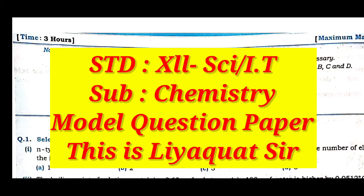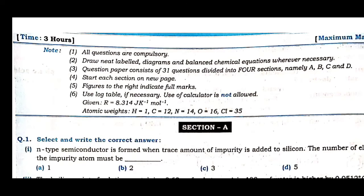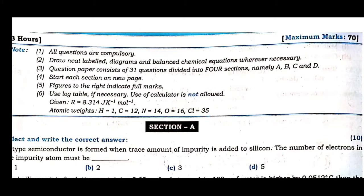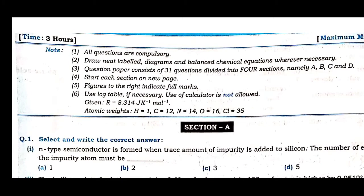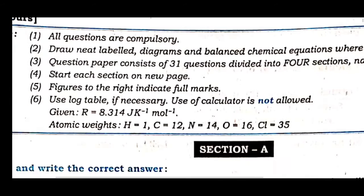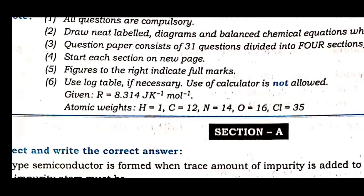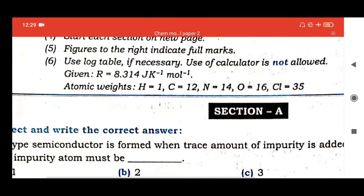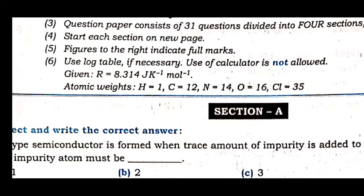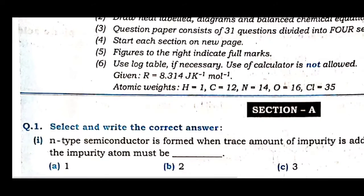Welcome back to the chemistry lecture for 12th science. We will see the model question paper. Last time we saw one model of chemistry; now we will see the solution with respect to the new model question paper. The total maximum marks are 70, duration is 3 hours, total number of questions are 31, divided into four sections A, B, C, D. Each section starts from a new page. Use of calculator is not allowed; logbook will be provided by the board. Certain constants and atomic masses are given. Section A has 10 MCQs and 8 one-sentence answers, totaling 18 marks.